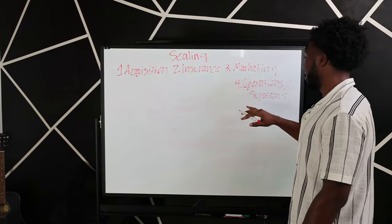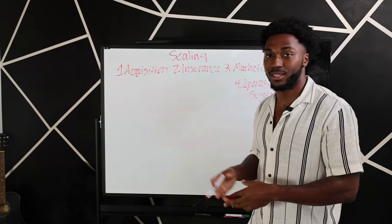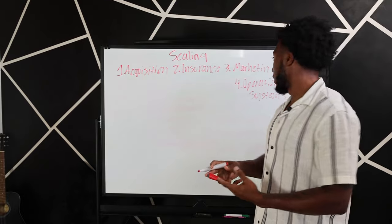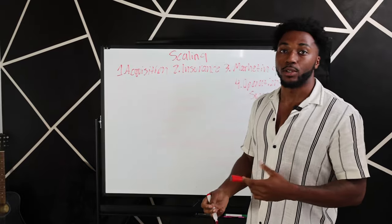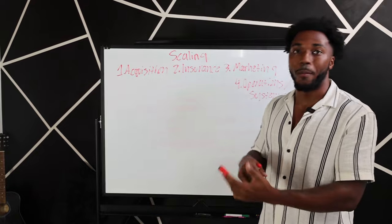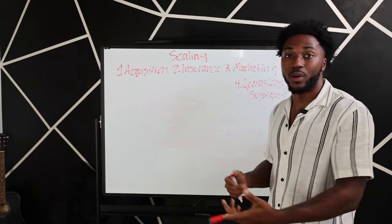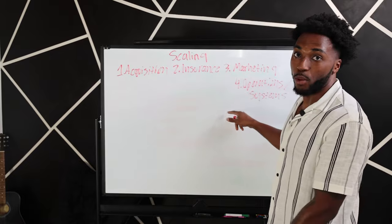The fourth piece here will be operations and systems. So what systems and operations do you have within your business? Do you have any softwares? When it comes to your systems, do you have anybody that you may have hired to take care of fleet management, to do your car washes, body repair, customer success management? All those will fall under operations and systems.